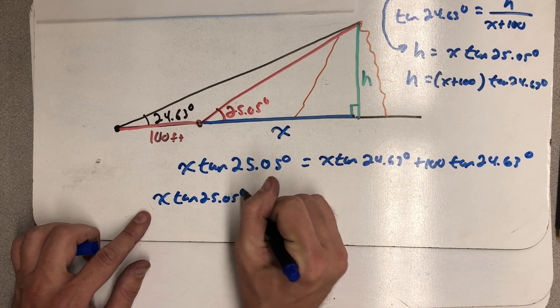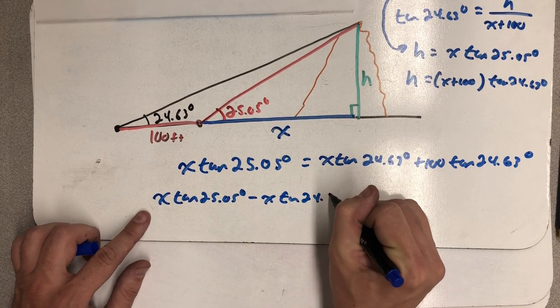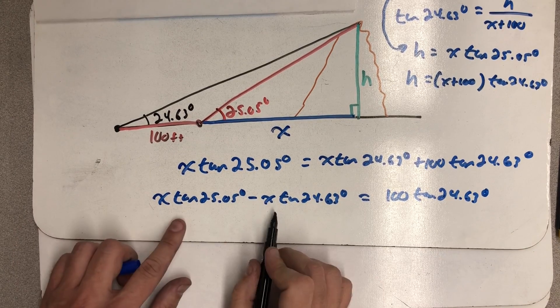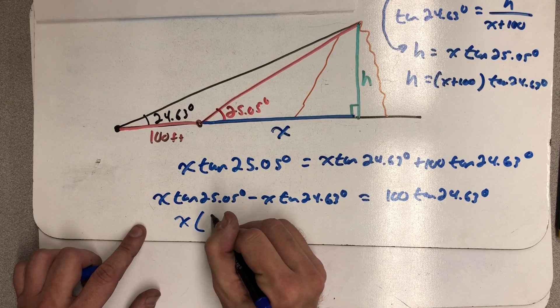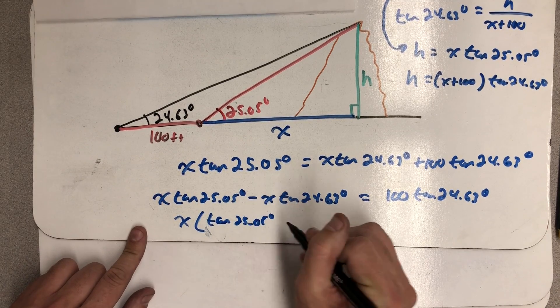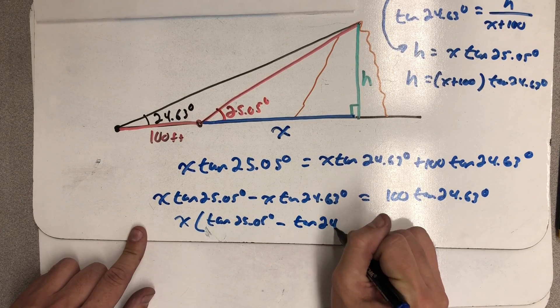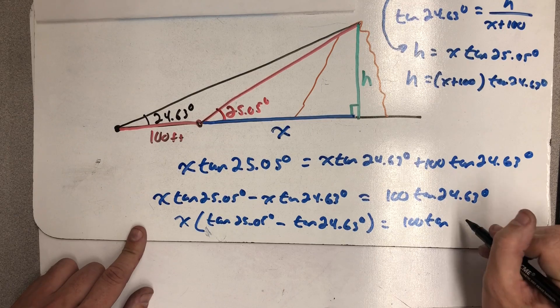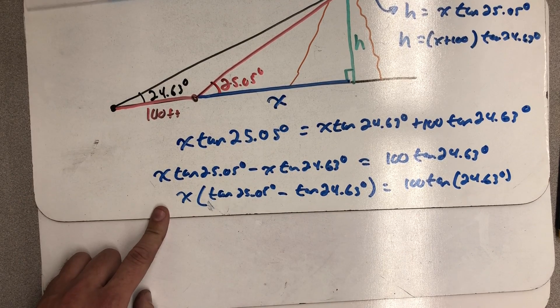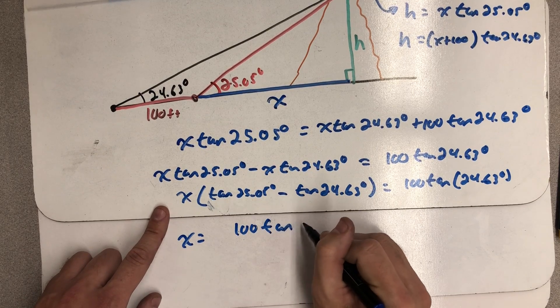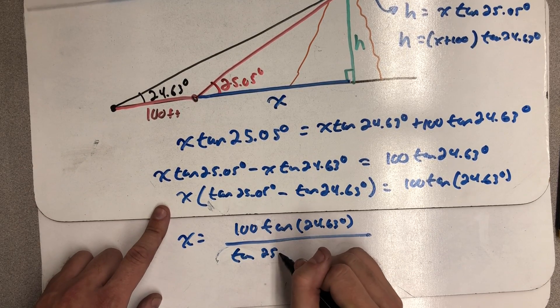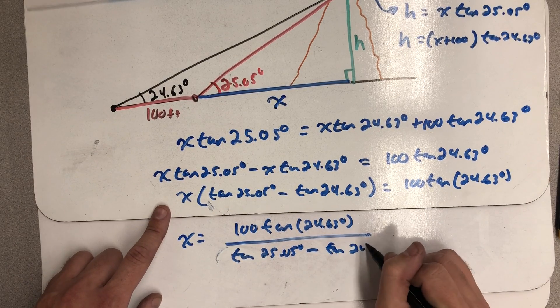And again, just pushing around the symbols, letting that tangent of so many degrees in each part just carry along with the problem. On this side I can now factor out an x because my goal here is to actually figure out what x is. So I got the tangent of 25.05 degrees left here and the tangent of 24.63 degrees is equal to 100 tangent of 24.63 degrees. So x I can find by dividing by this thing that's the difference. So x is equal to 100 tangent of 24.63 degrees all divided by the tangent of 25.05 degrees minus the tangent of 24.63 degrees.